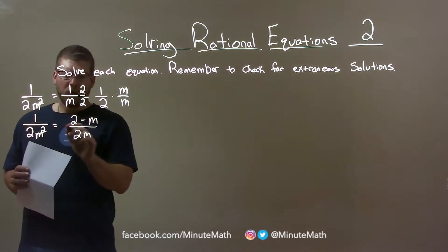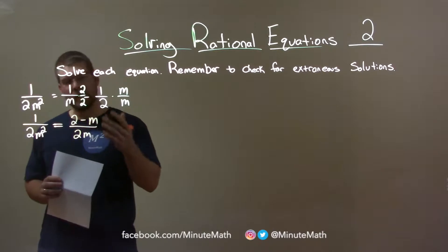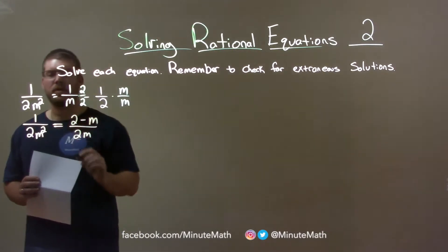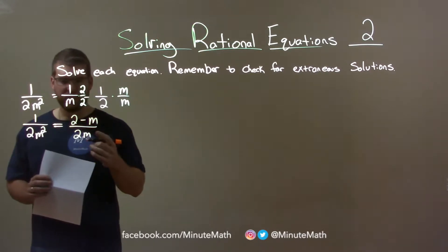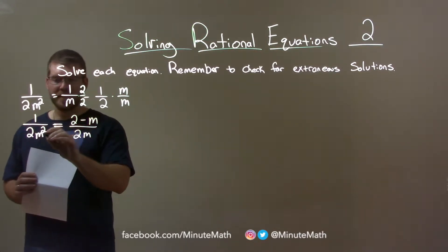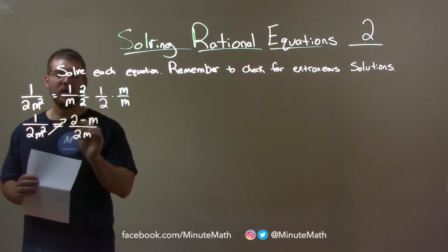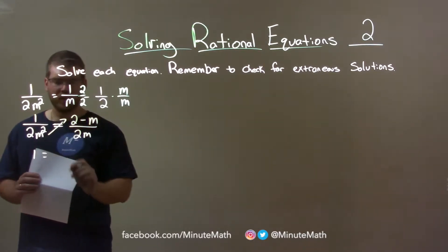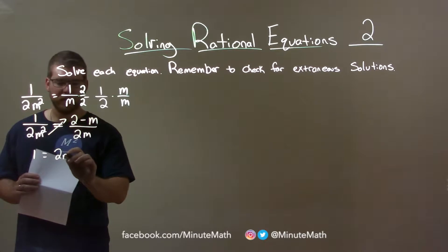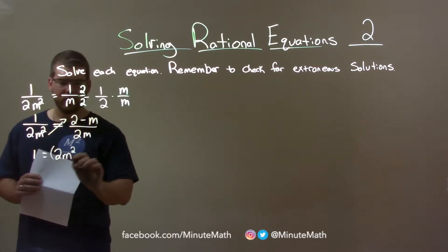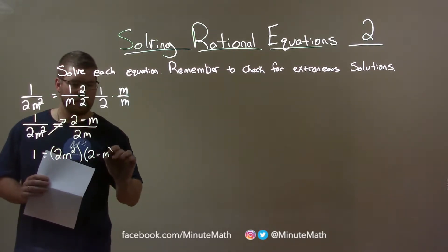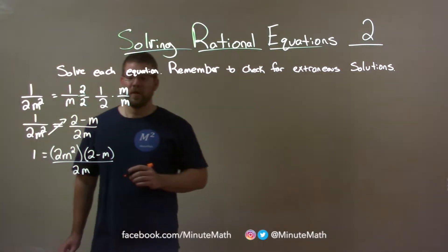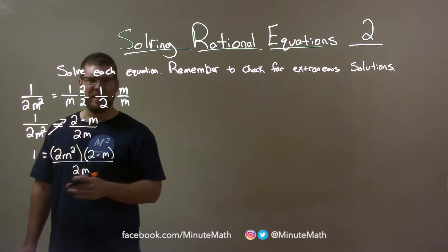We want to cross multiply but before we do that, I do like a half cross multiply. You don't actually have to multiply both across to their corners. What I can do is I'm going to take this 2m squared and just bring it up to the right. So we have 1 left over here equals, now watch this, 2m squared times, in parentheses, 2 minus m over 2m.